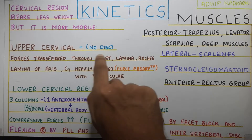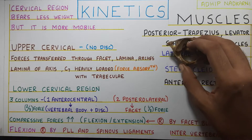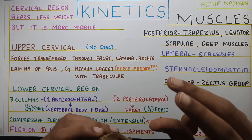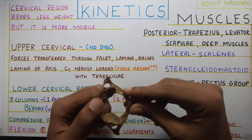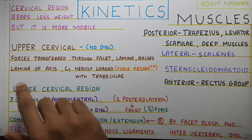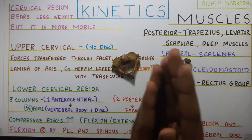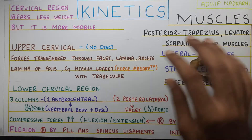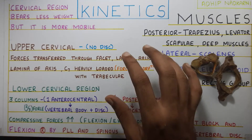The upper cervical region has no disc. The atlas and the axis below it don't have a disc placed between them. This means the forces are transmitted right through them with no disc for absorption. So the forces are transferred through the facet, lamina, and the arches — the posterior pedicles and all these structures carry and transmit the forces downward. The lamina of the axis and C7 are heavily loaded with trabeculae, which help in absorption of the forces.